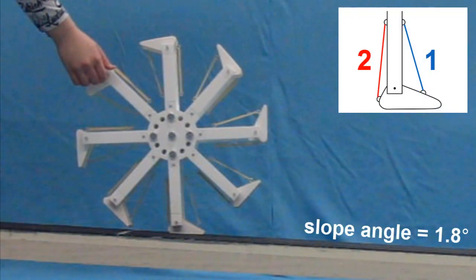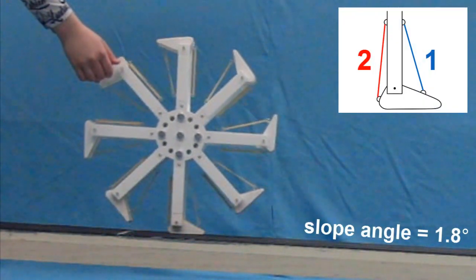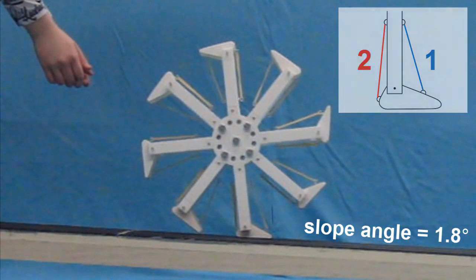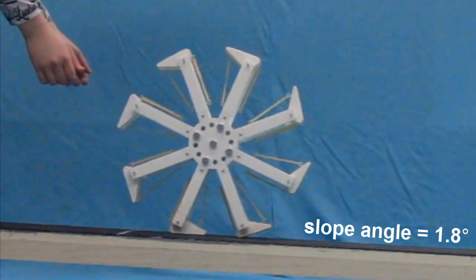Here it is trying to walk down a slope of just 1.8 degrees, but the energy losses from the foot collisions are too great for the amount of energy input by gravity.